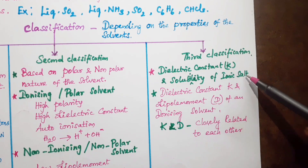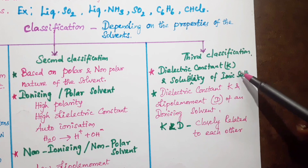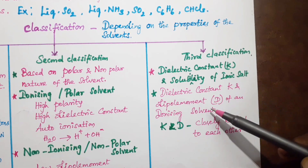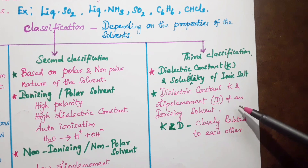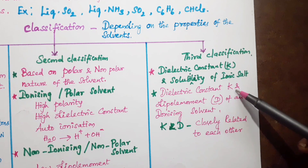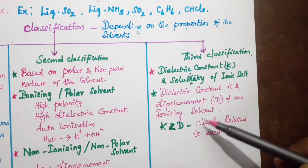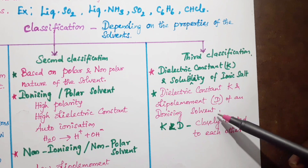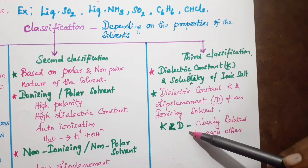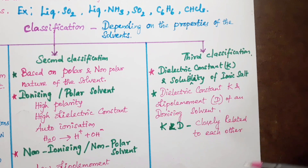The third classification discusses the relationship between the dielectric constant (k) and the solubility of ionic salts, and also the relationship between the dielectric constant (k) and dipole moment. These two are closely related — as k increases, the dipole moment also increases.